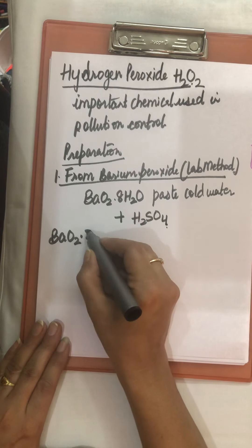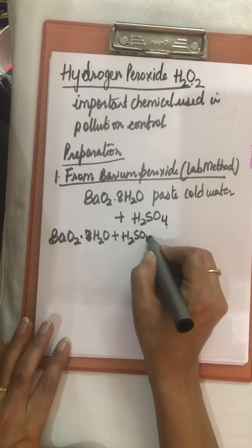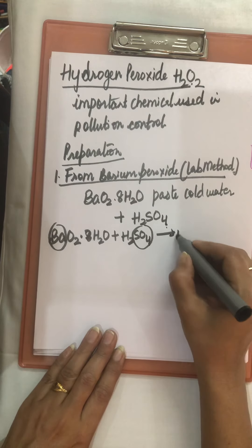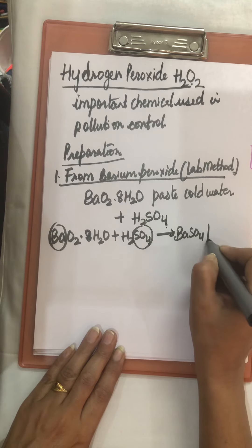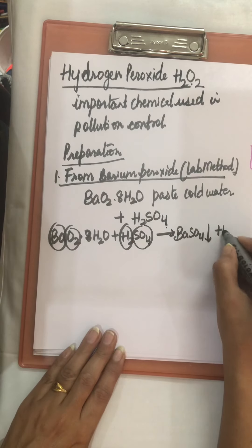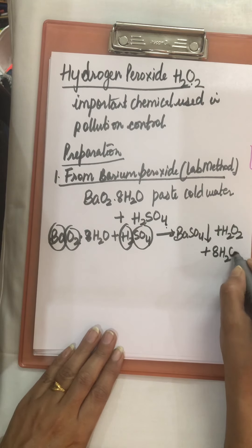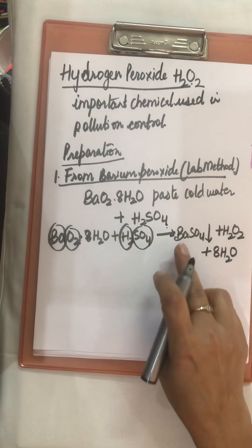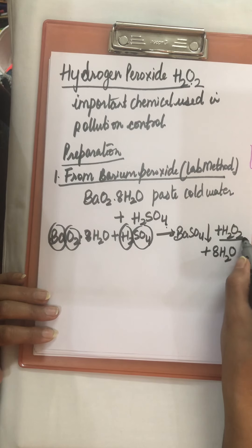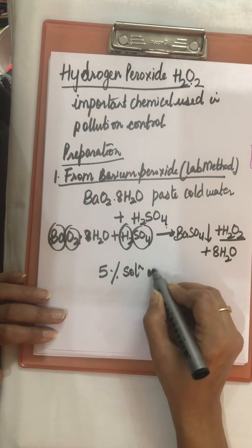On adding sulfuric acid to this paste, the reaction forms barium sulfate as white precipitates along with hydrogen peroxide H₂O₂. The eight water molecules evaporate. The white precipitates of barium sulfate are separated by filtration. In this method, we are not getting pure H₂O₂; we get just a 5% solution of H₂O₂.